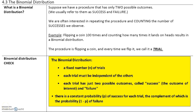In section 4.3 we will talk about the binomial distribution. First off, what is a binomial distribution? Suppose we have a procedure that has only two possible outcomes. We usually refer to them as a success, which is getting what we want, and a failure, which means getting the opposite. We are often interested in repeating the procedure and counting the number of successes we observe. For example, let's say we flip a coin 100 times and count how many times it lands on heads — this results in a binomial distribution. The procedure here is flipping a coin, and every time we flip it is called a trial. A success is when the coin lands on heads, and a failure is when the coin lands on tails, so we only have two options.